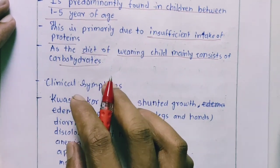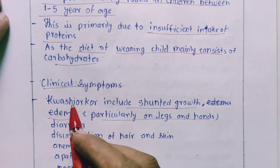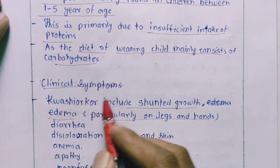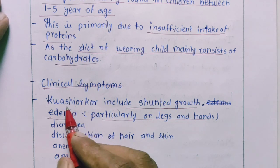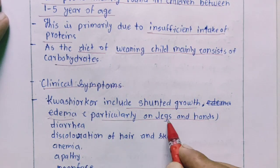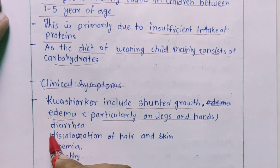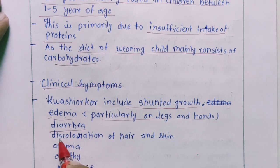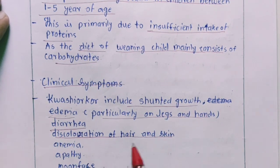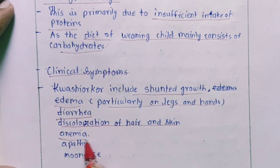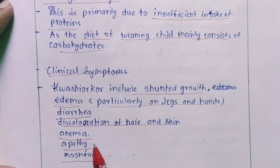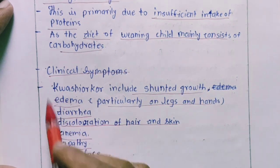Clinical symptoms include stunted growth, edema particularly on the legs and hands, diarrhea, discoloration of skin and hair, anemia, apathy, and moon face. These are the main clinical symptoms of Protein Energy Malnutrition.